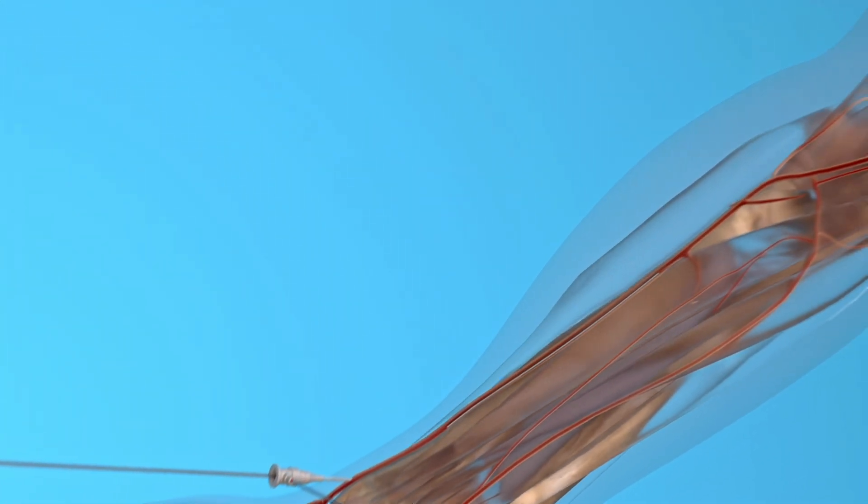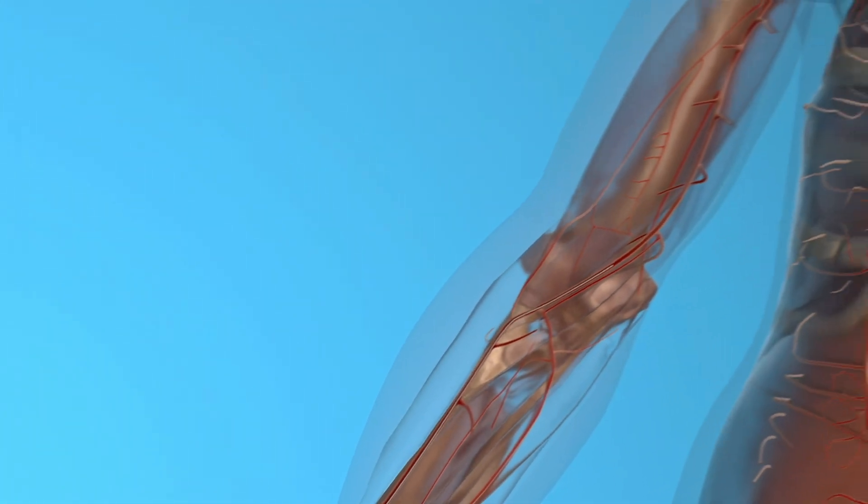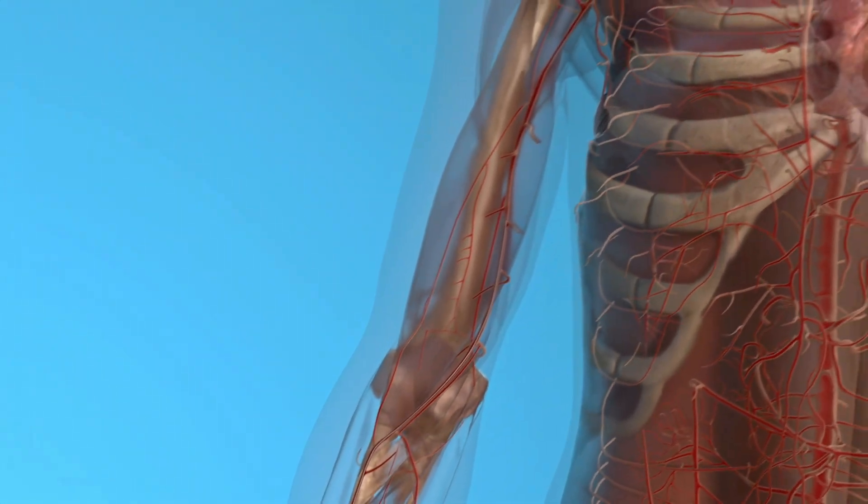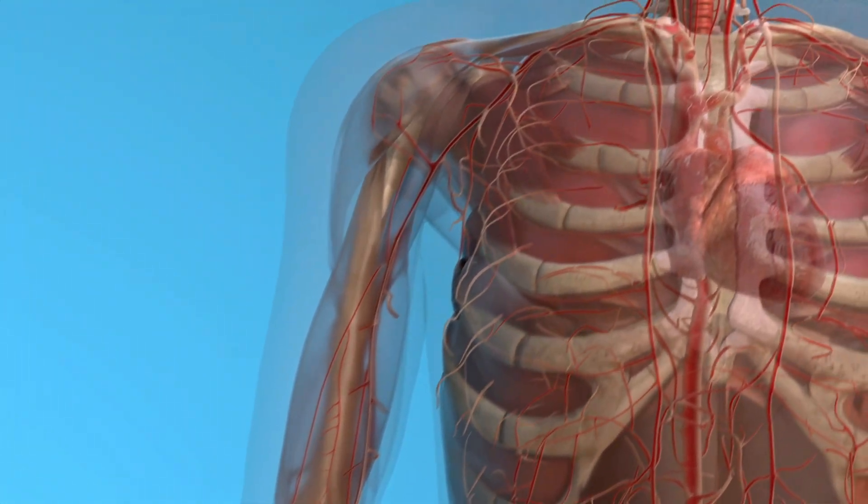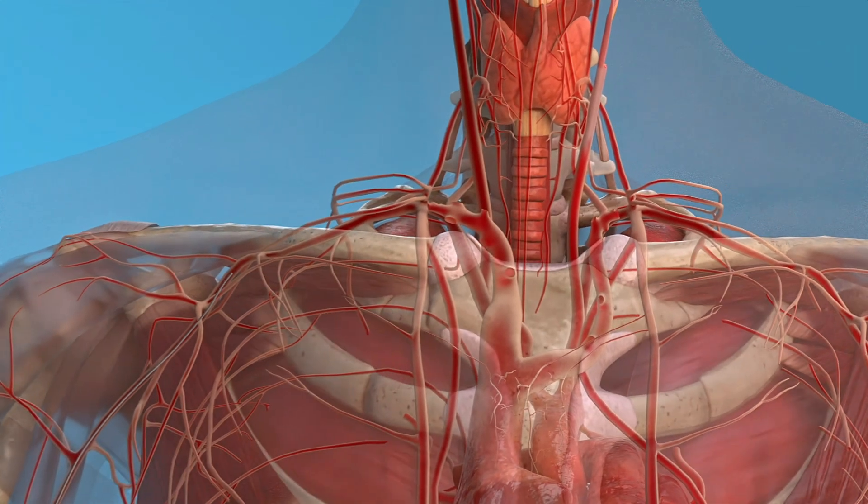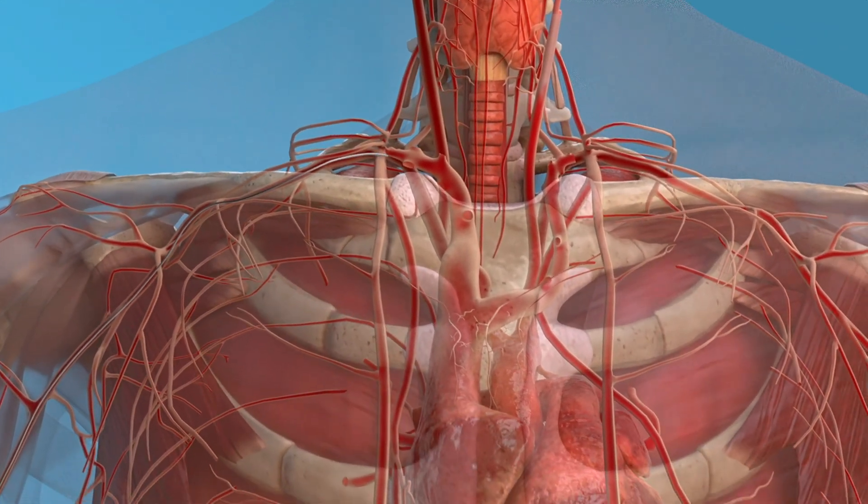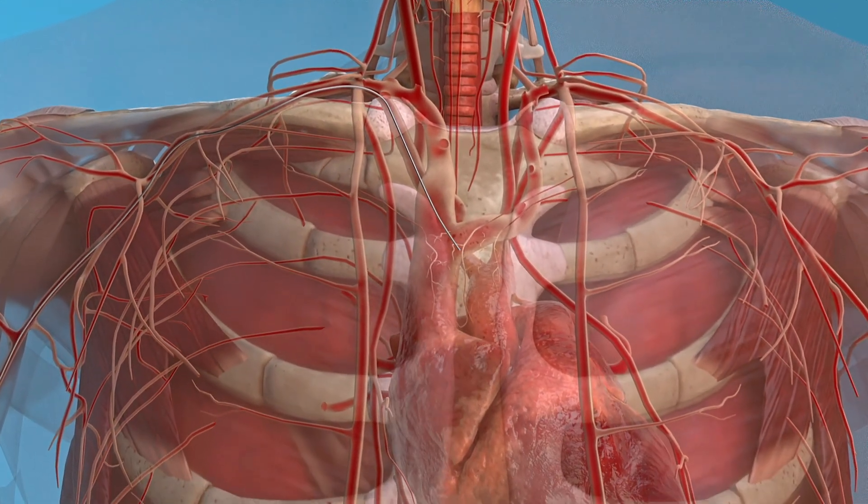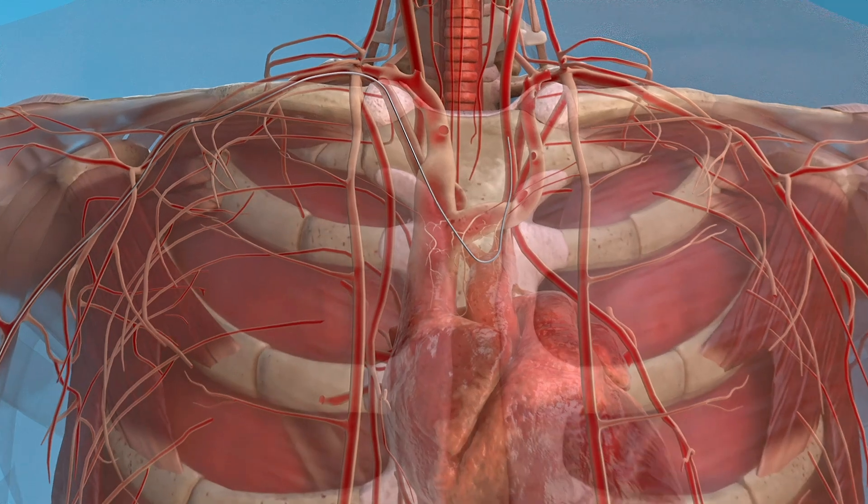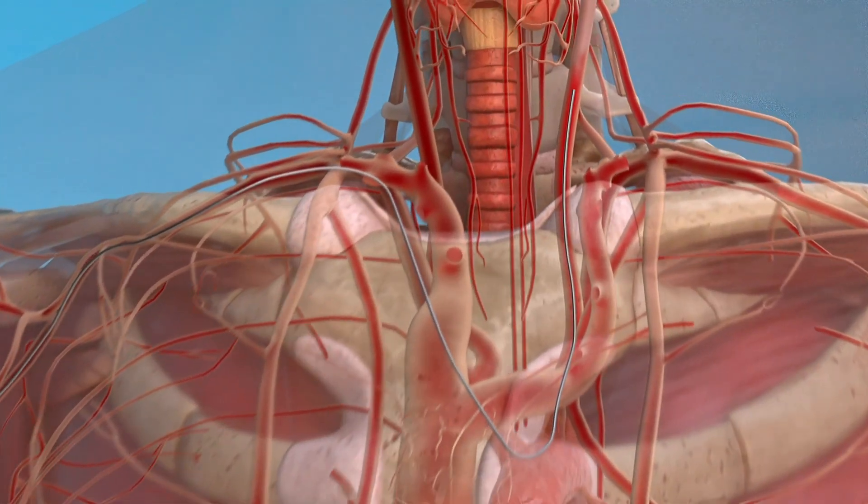Access through the radial artery is considered more difficult from a technical point of view. This is due to the small diameter of the artery, the tendency to spasm of the radial artery, and complex bends of the vascular bed along the course of the catheter. That being said, it's generally safer compared to femoral access.